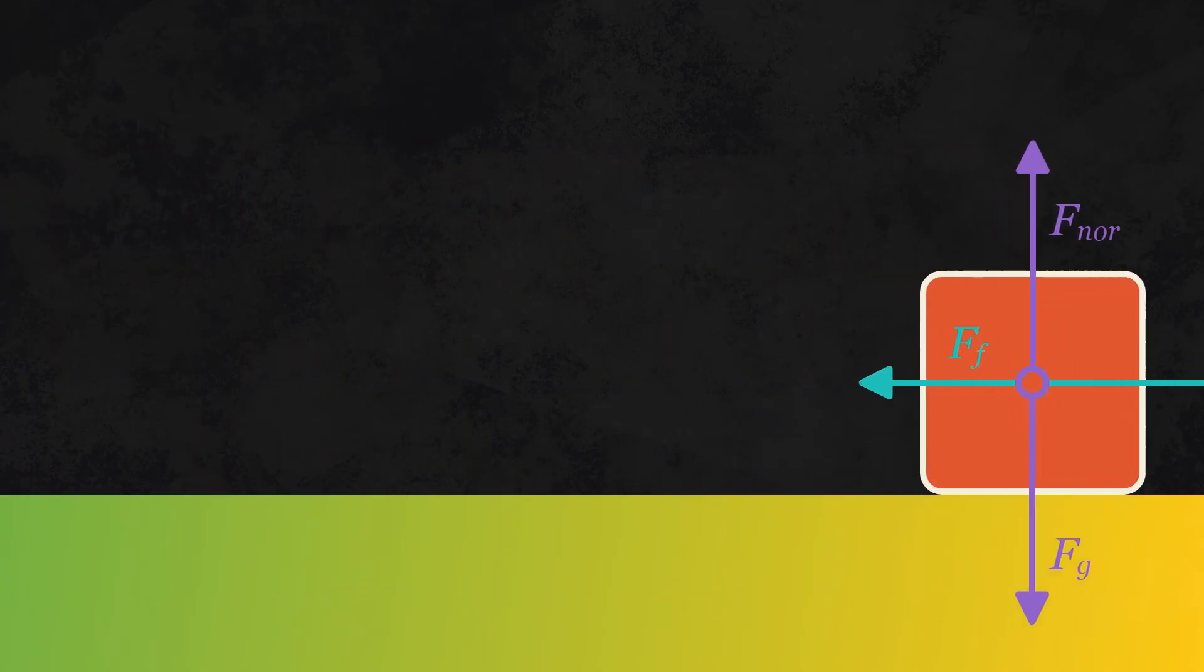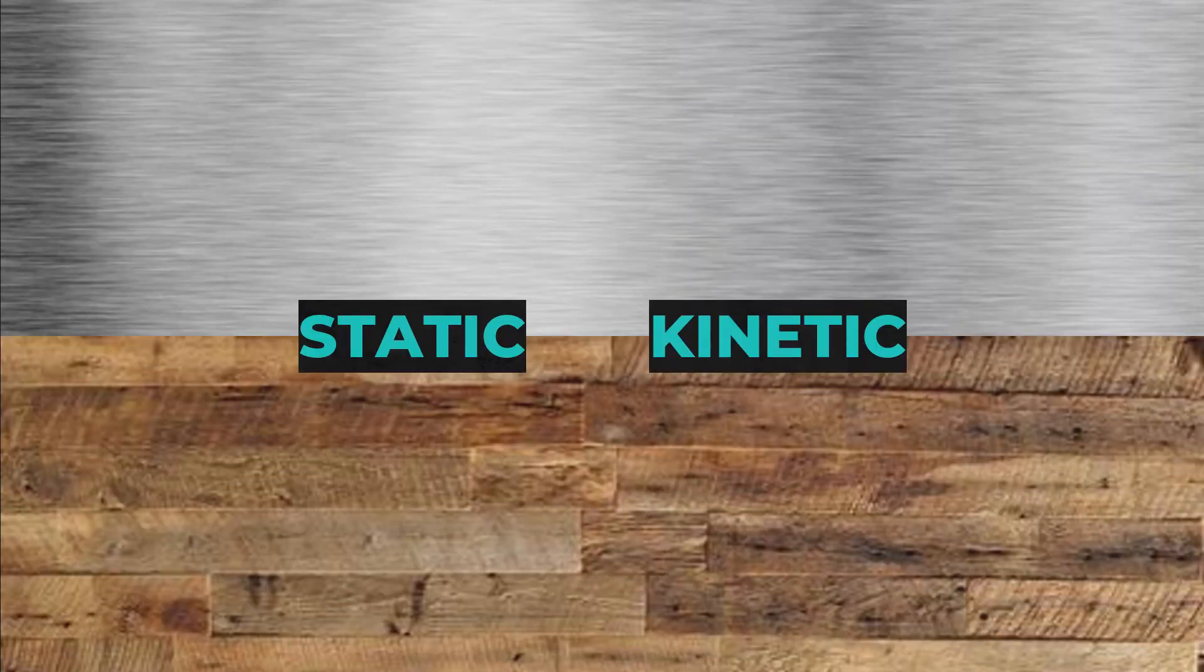However, you might realize that there's a point where the force of friction is higher than the applied force. This leads us to the difference between the two types of friction, kinetic and static. Simply put, kinetic friction is friction during movement, and static friction is friction that resists movement.